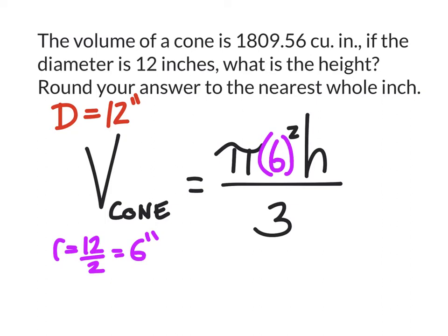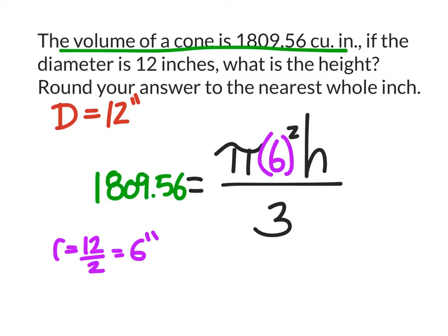In this formula, I can replace the radius with 6 inches. At the very top here, they told us the volume of the cone is 1,809.56 cubic inches. So I'm going to replace the volume with 1,809.56 cubic inches. At this point, this is all set up for us, and we're going to solve it like a regular equation.